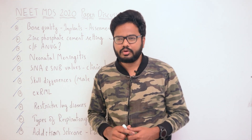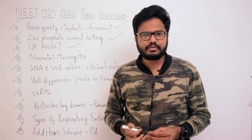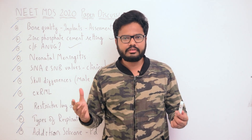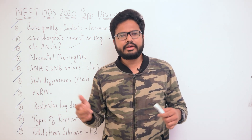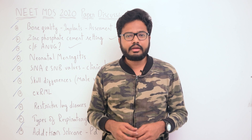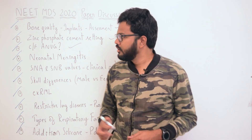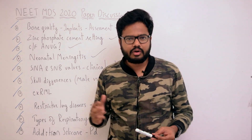Moving on to the next question: clinical features of ANUG. Acute necrotizing ulcerative gingivitis has the following clinical features — bleeding, painful gums, ulcers, receding gums, halitosis, metallic taste, excessive salivation, difficulty in swallowing or talking, and fever.